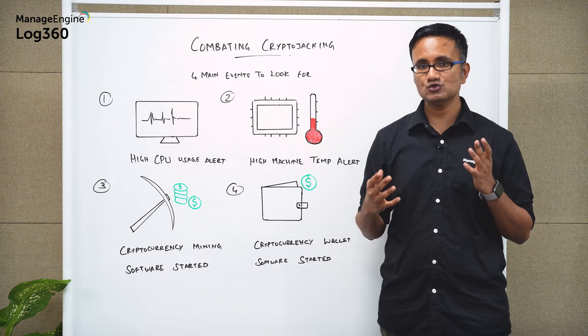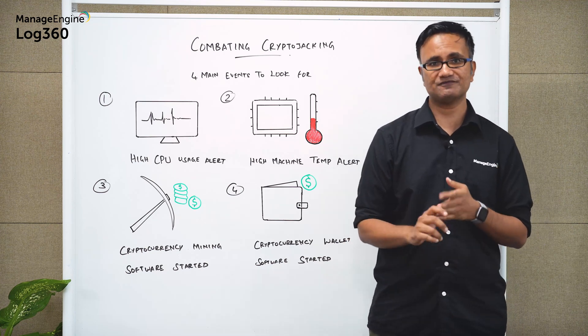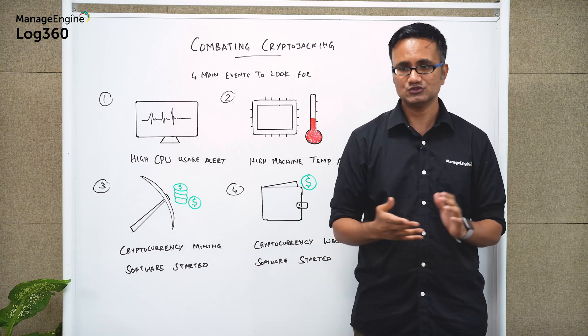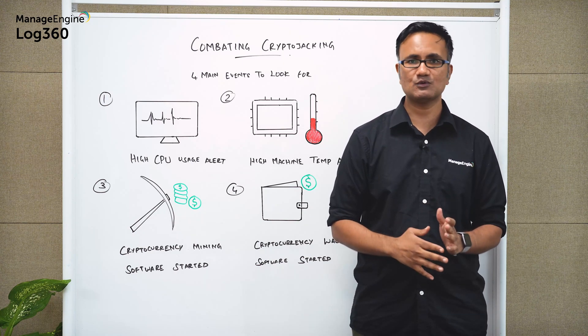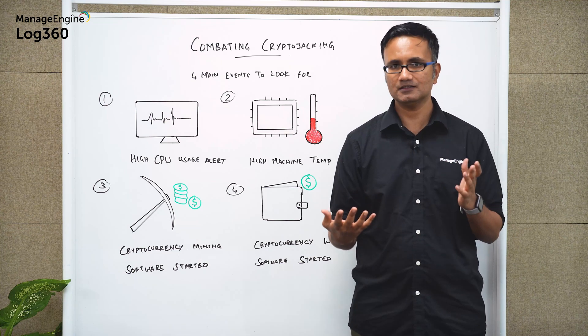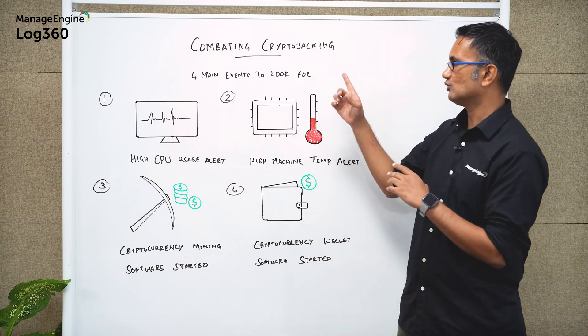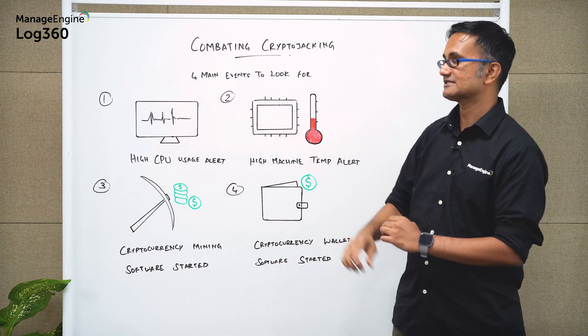So whenever the CPU usage goes beyond a certain threshold usually it's around 80 percent. So if it is more than 80 percent usage and let's say that happens for more than five minutes there is something definitely wrong and you may want to be alerted about that. So that is one event that you want to definitely look for when you want to defend against crypto jacking.